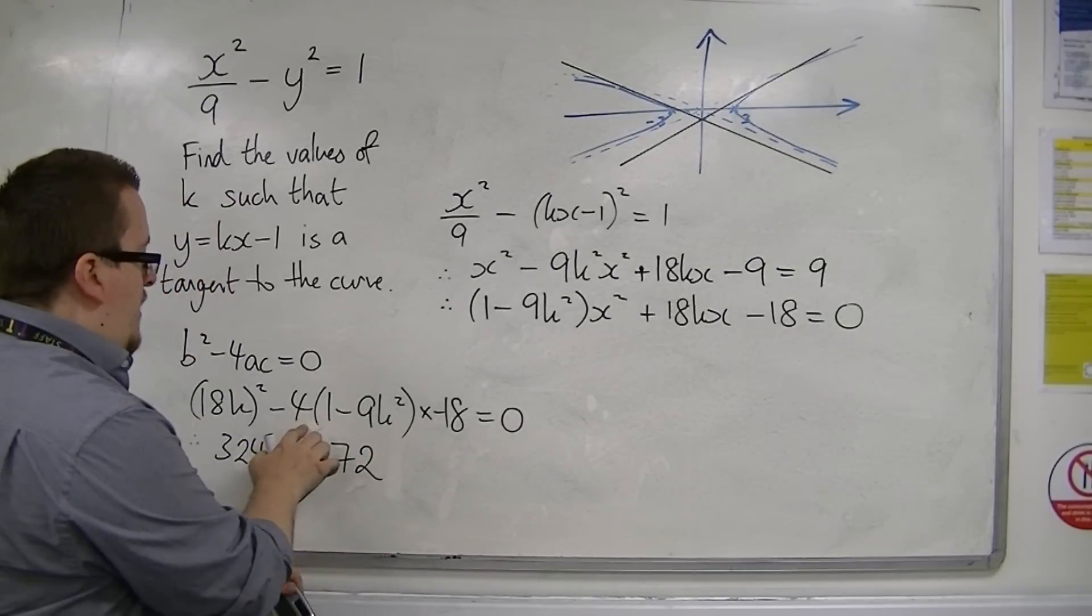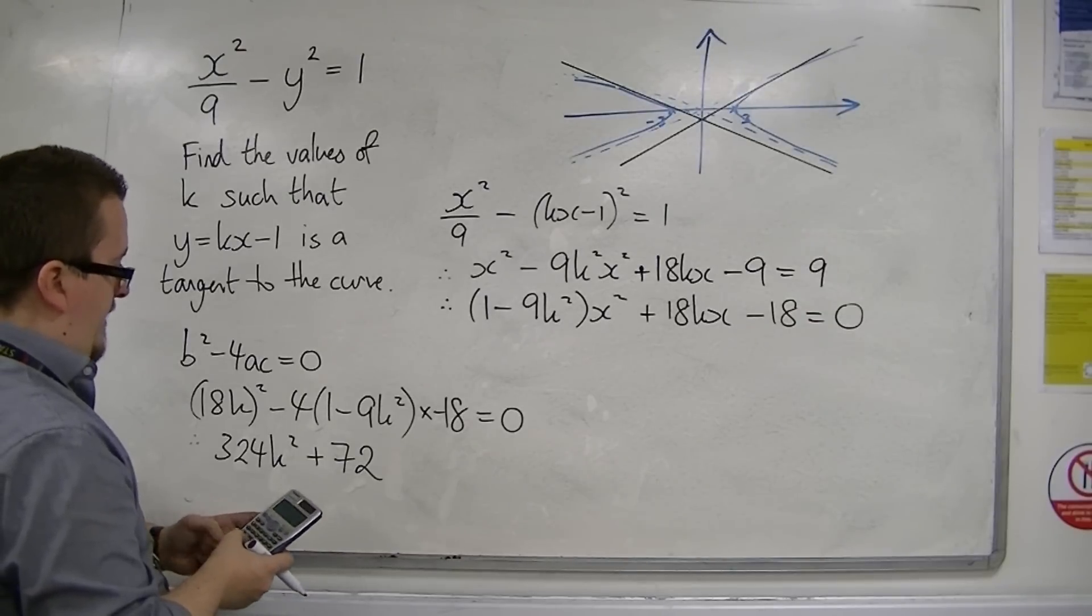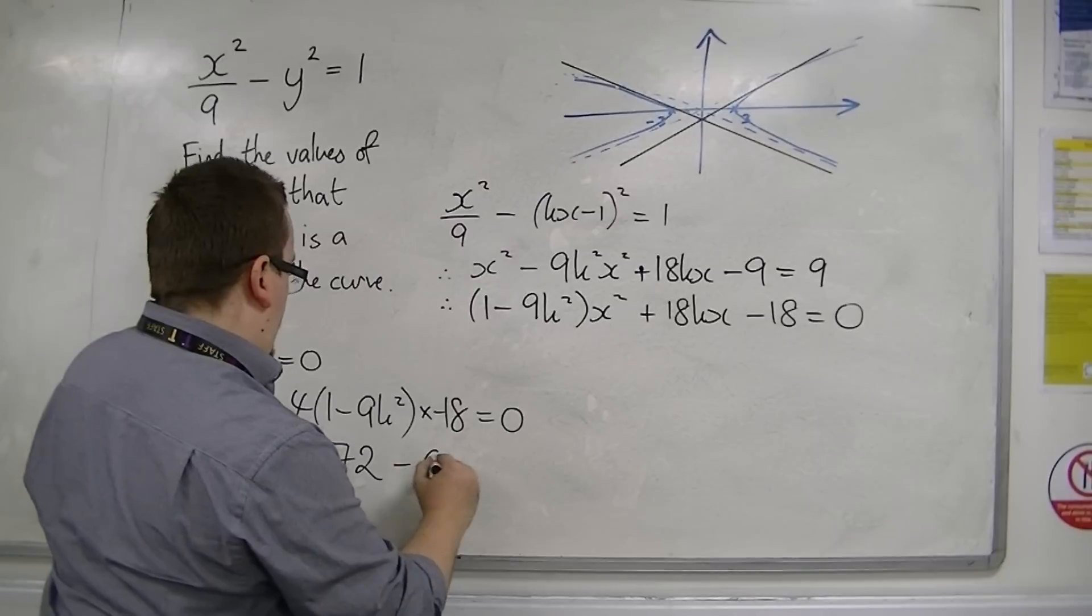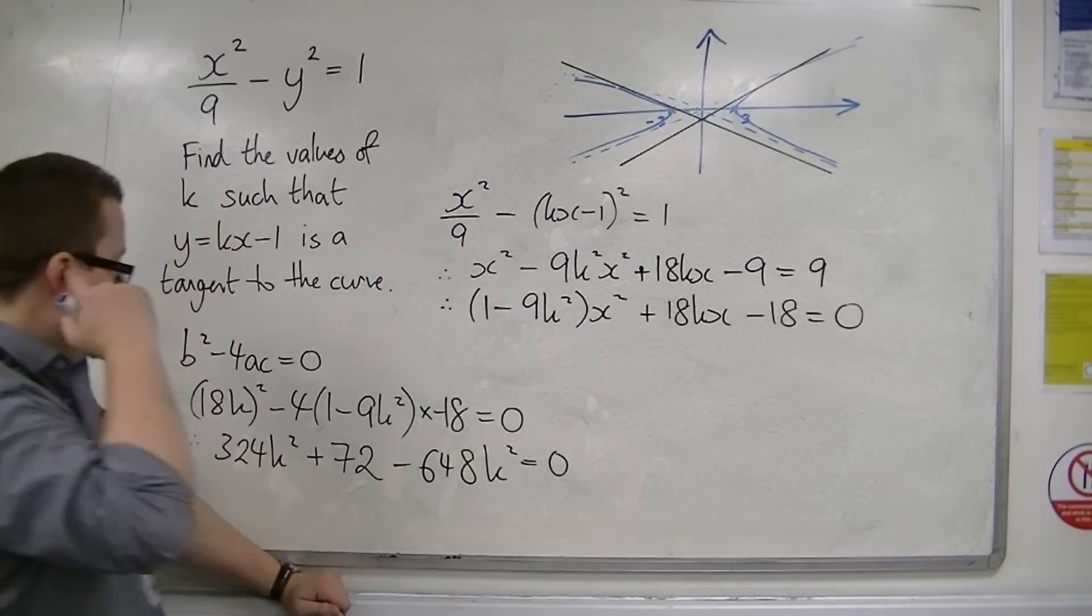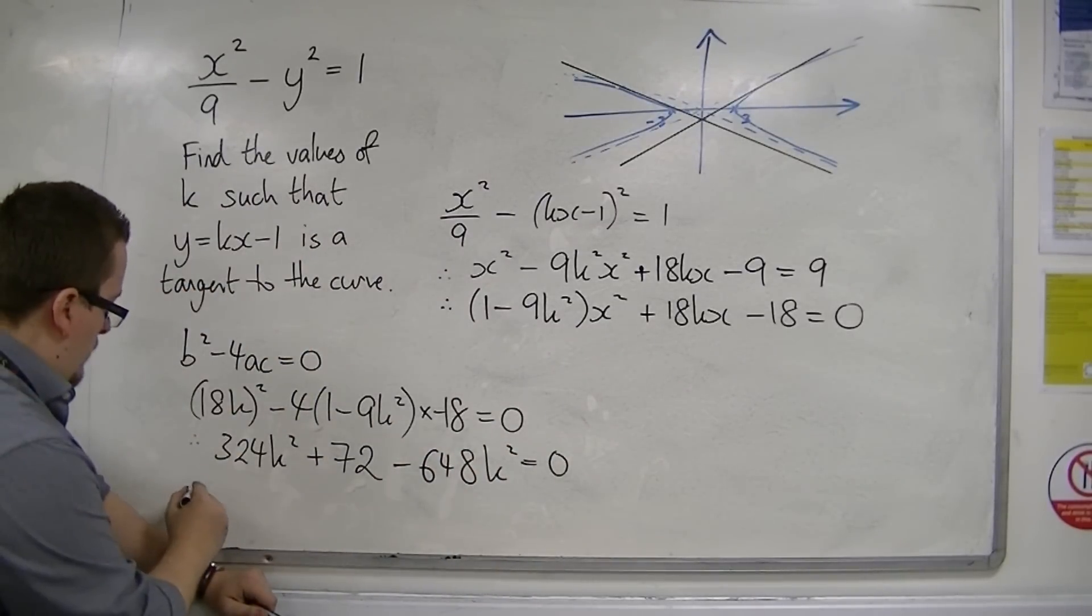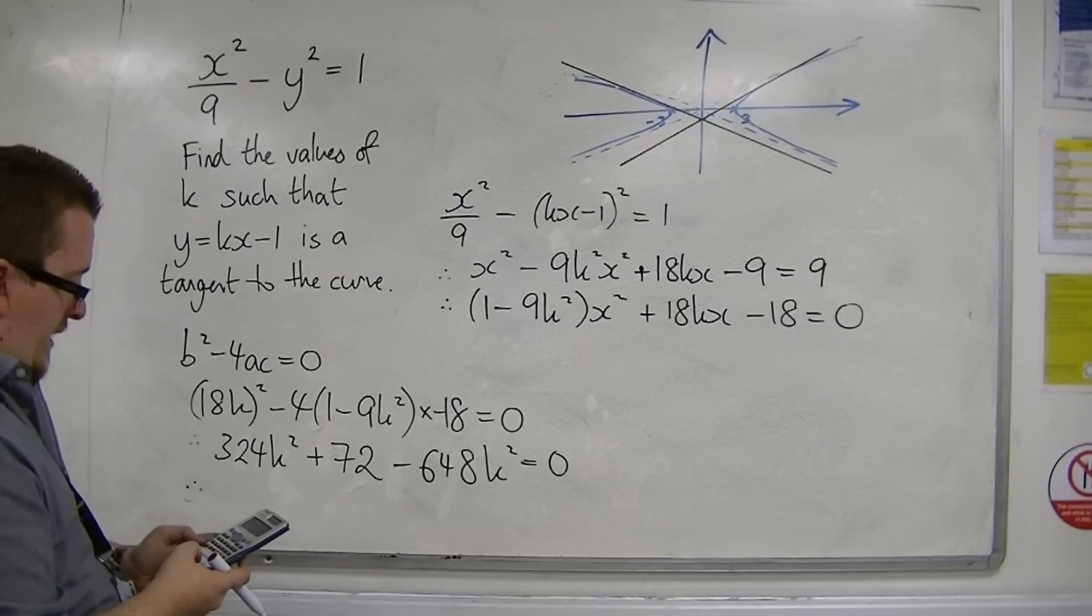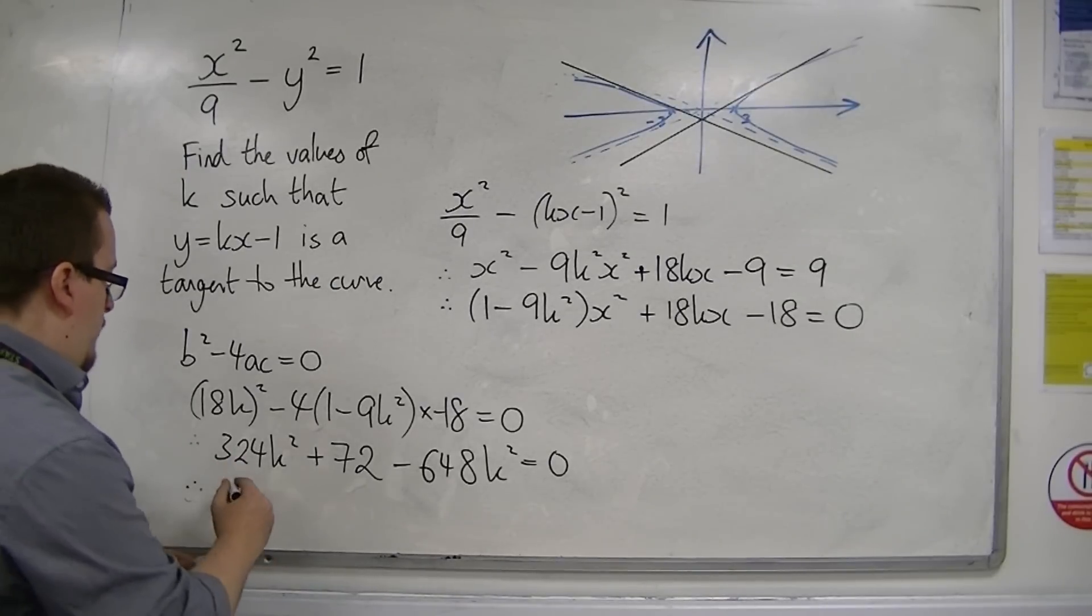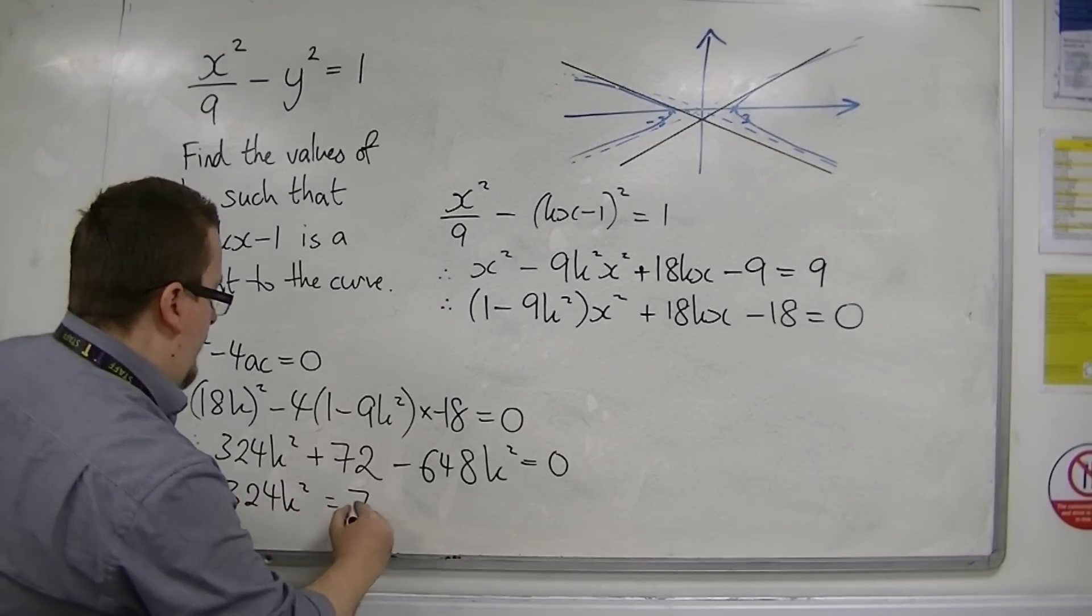And we've got minus 4 times minus 9 times minus 18. So 4 times 9 times 18, and that's going to be minus 648k squared. So 324 take away 648 is minus 324. So we've got 324k squared is equal to 72.